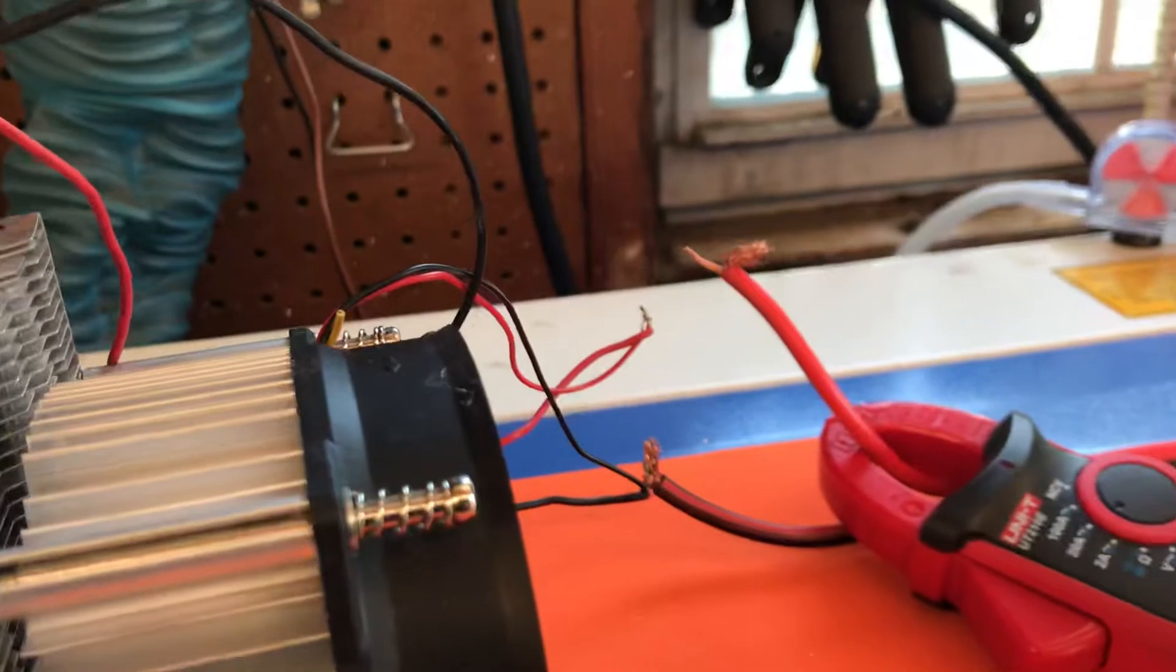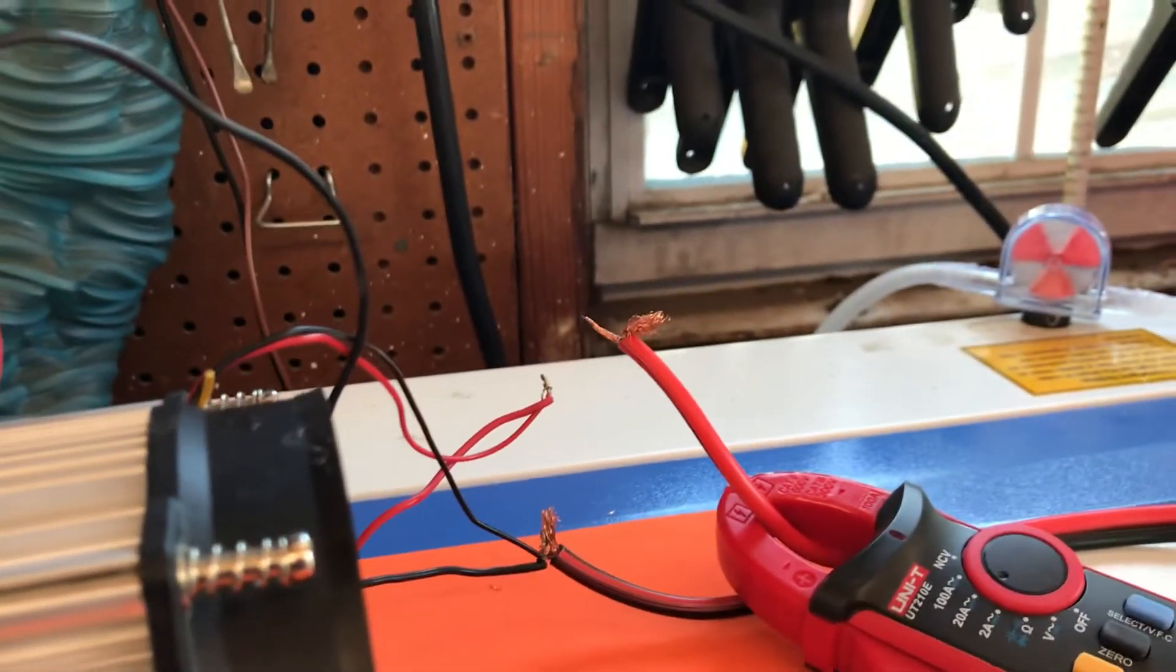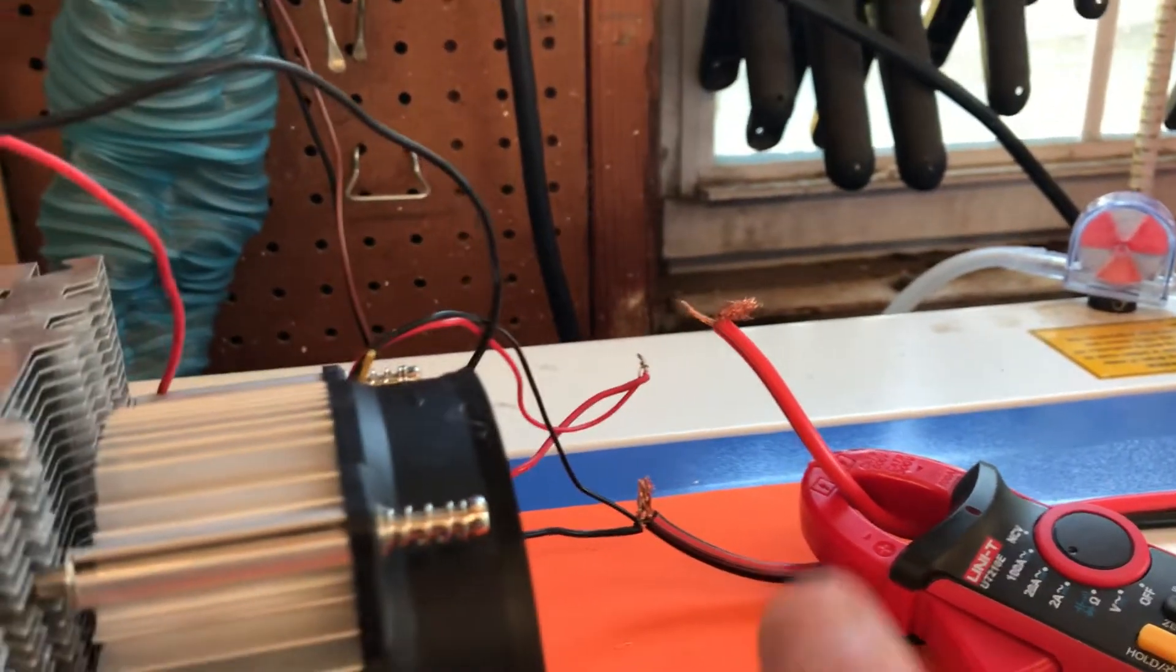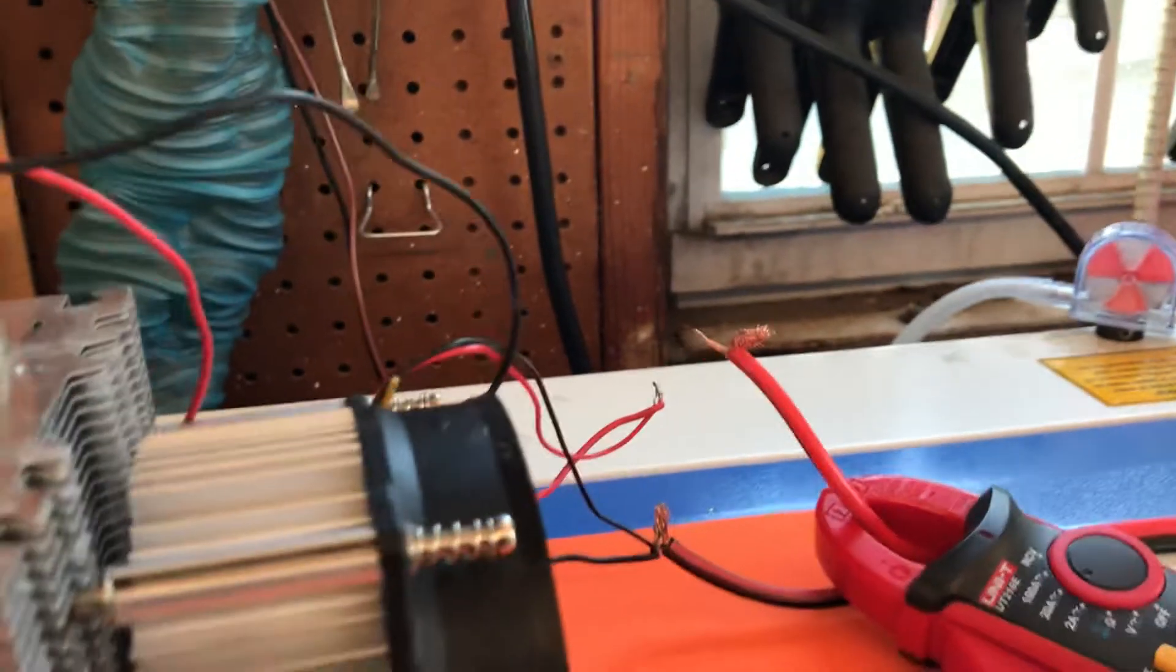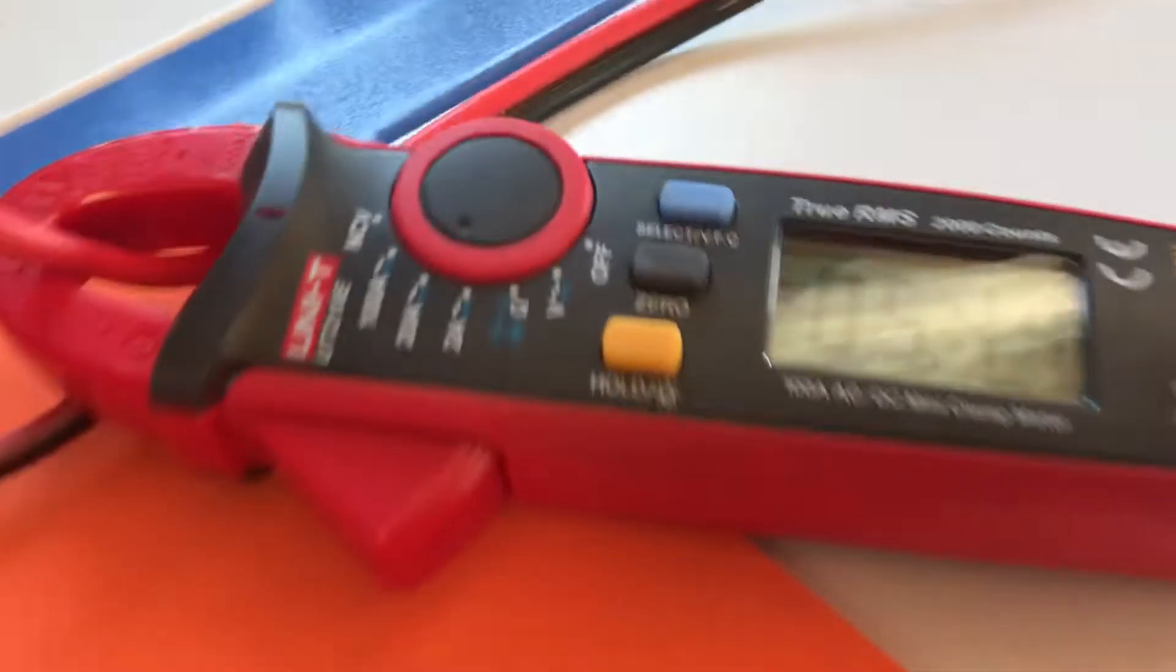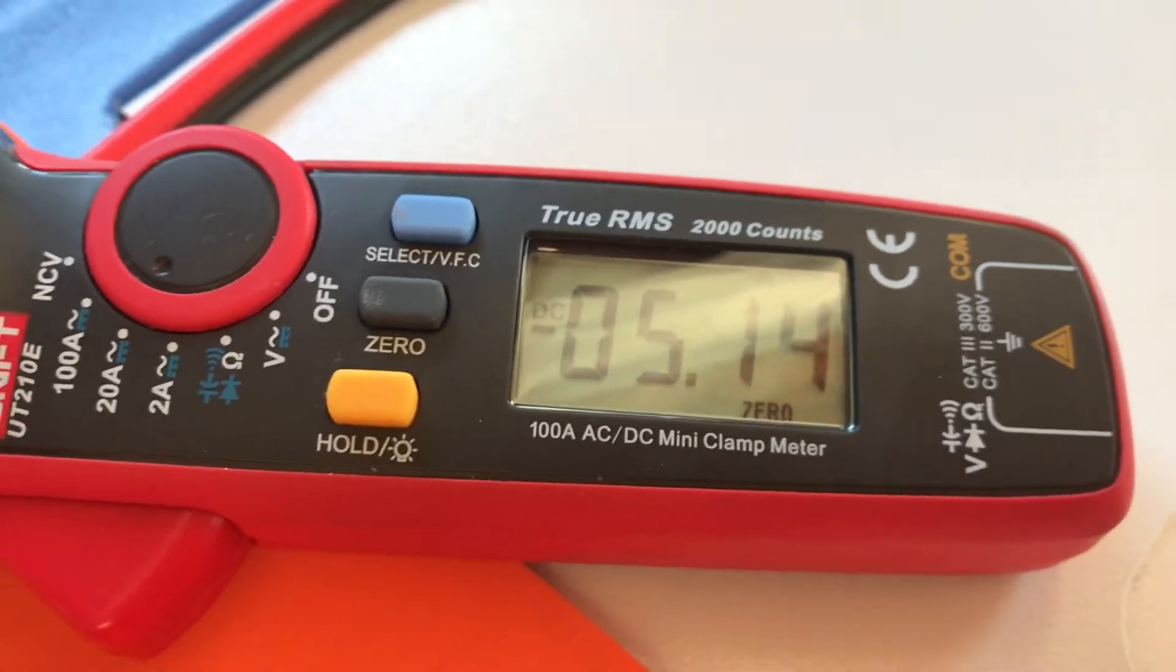Alright, gotta give me one second because I'm holding the camera. I'm just gonna twist those two wires together right there. I'm just gonna set the camera down just for a second. Okay, hang on, almost got it. Alright I got it. Alright, sorry about that. So we're pulling just a hair over five amps.